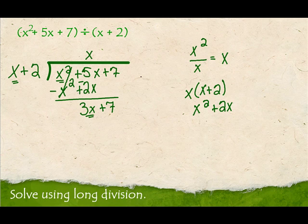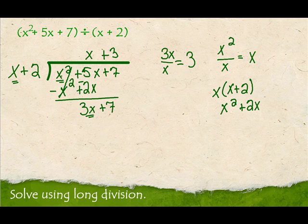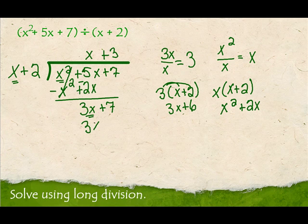I look at 3x and x, and write 3x over x. When I reduce it, I get 3 — a positive 3— so I write plus 3. Now I'm going to distribute this 3 through x plus 2. 3 times x is 3x, and 3 times 2 is 6. So 3x plus 6 goes underneath.